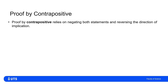This idea of rewriting statements in their contrapositive form gives us the bedrock of another powerful method of proof. If for whatever reason we can't directly prove that p implies q, but we can prove that not q implies not p, then — recognizing that these are logically equivalent — proving the contrapositive form has therefore proven the original statement.